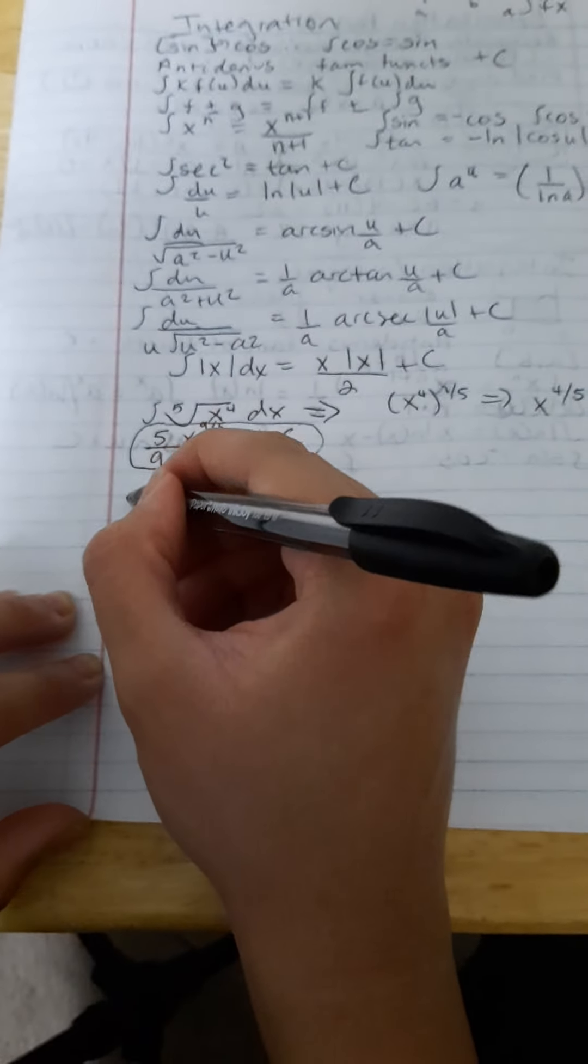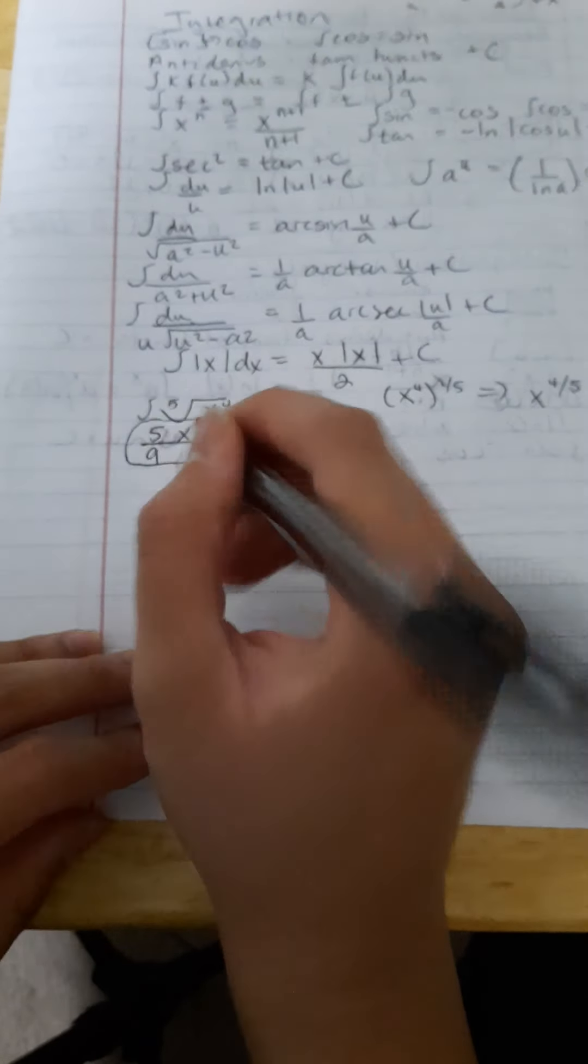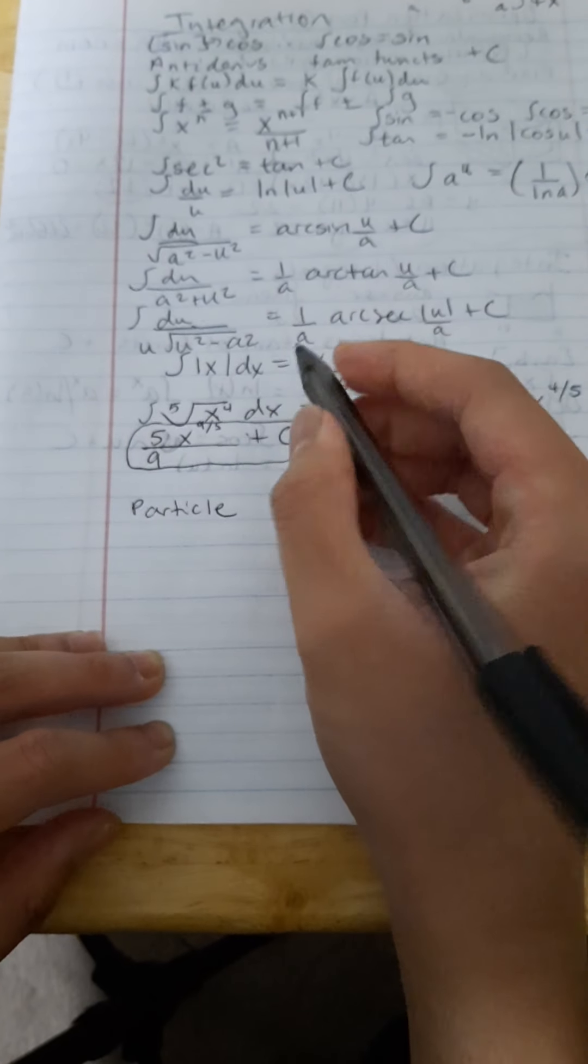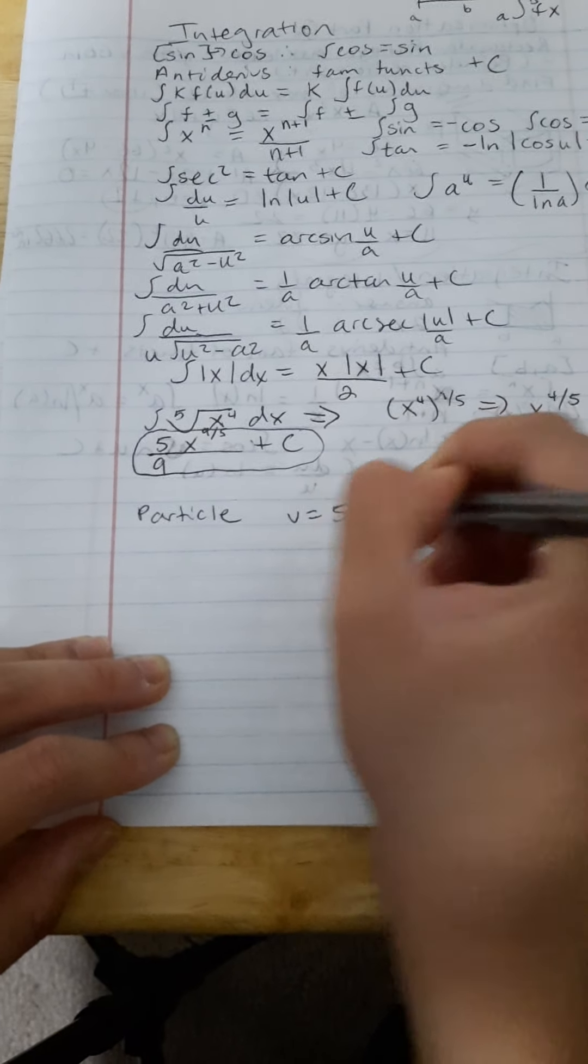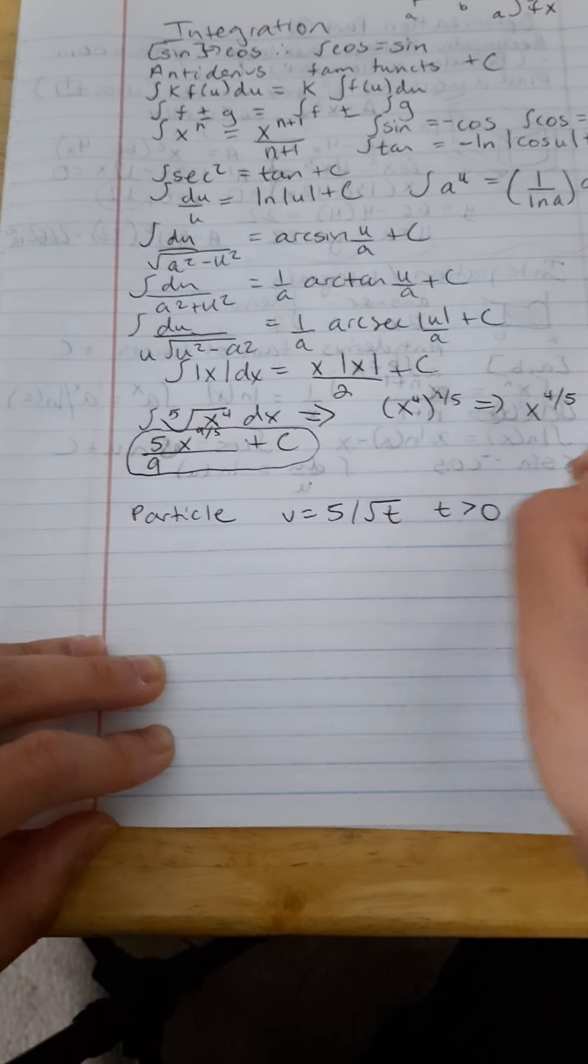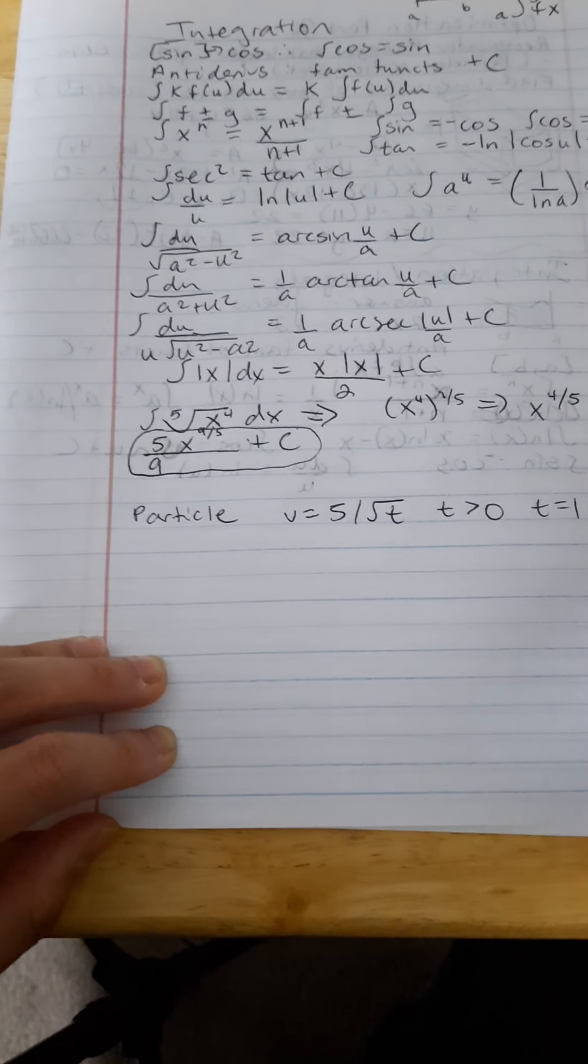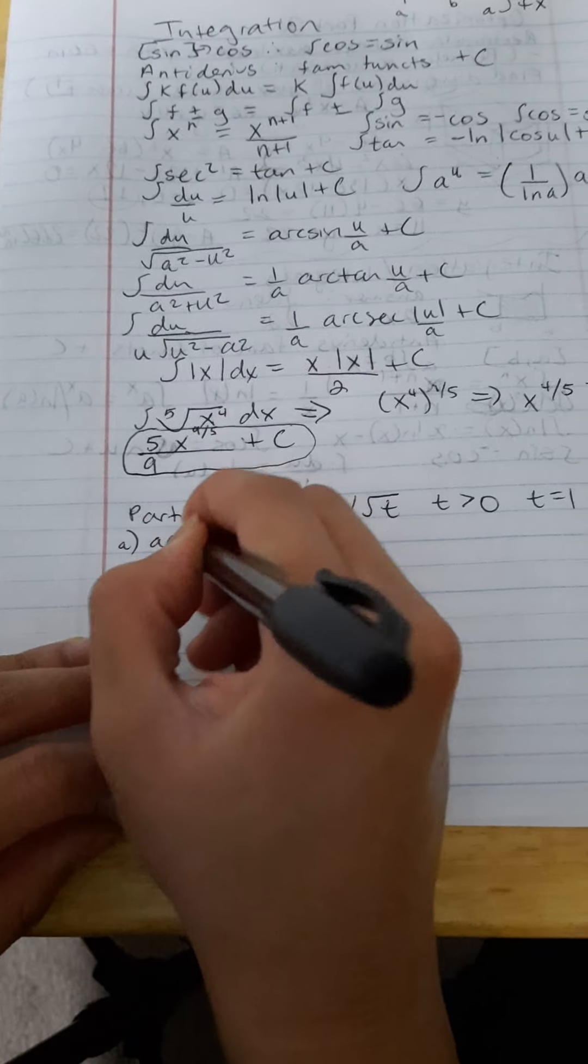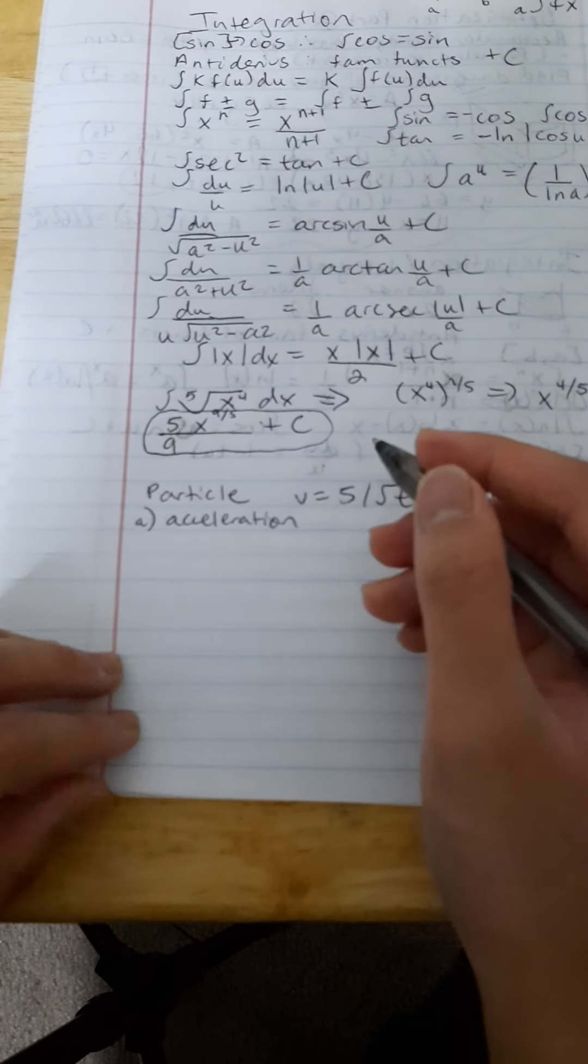Next example, we'll try, let's try a particle one. Let's do this particle. Particle moving across the x has the velocity of 5 divided by square root of t, where t is greater than 0, that t equals 1, the position, x, the position, is equal to 11, and we need to first know the acceleration.